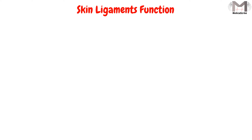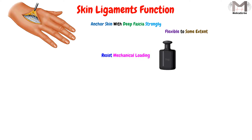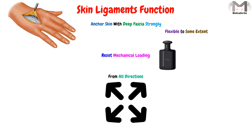The skin ligaments function: these ligaments anchor the skin with the deep fascia strongly, and they are flexible to some extent, so they resist mechanical loading applied on the skin from all directions. That covers everything about the skin ligaments. See you in the next video, goodbye.